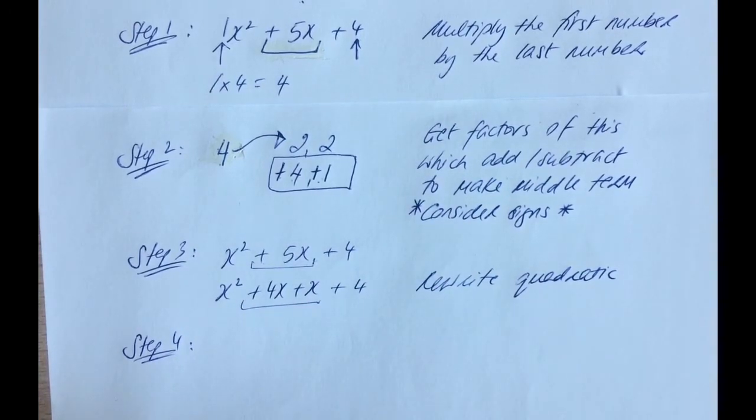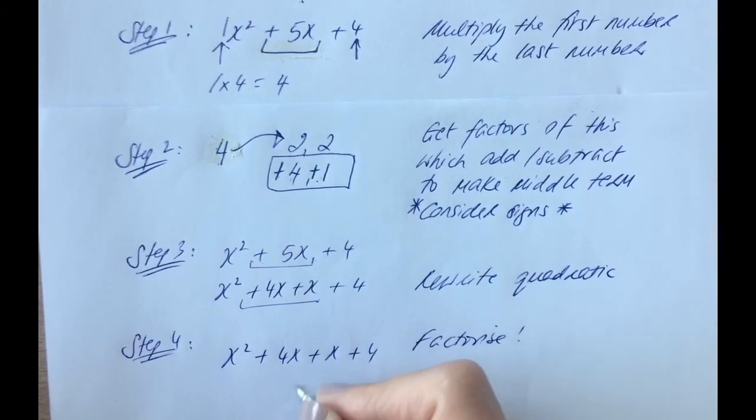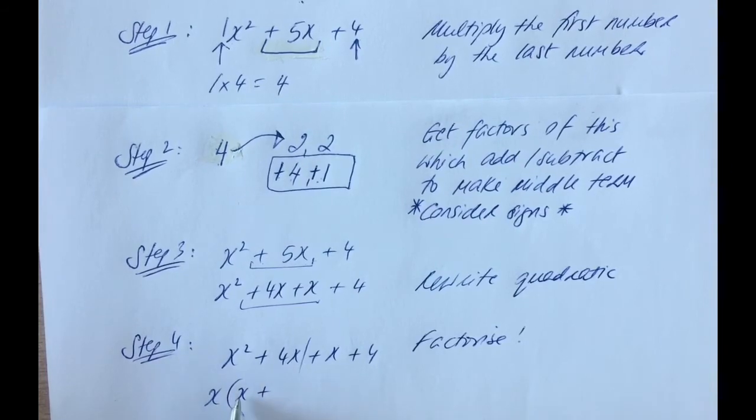When you have 4 terms, it's your grouped common terms type of factorising. So, taking your x squared plus 4x plus x plus 4, splitting it, looking at the first two terms, common to both is x, and what you would need to multiply back again to get x squared, of course, is x times x. x squared plus 4 times x will give you the 4x.